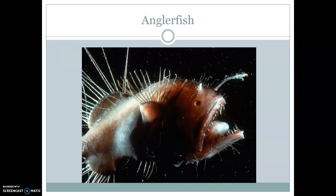Looking at the anglerfish, we can see all its different adaptations. This right here is kind of like a little photophore that gives a little bit of light. We can see the eyes up towards the top of the head with very, very large pupils. And again, this very large mouth is able to expand even further to catch the prey it needs.